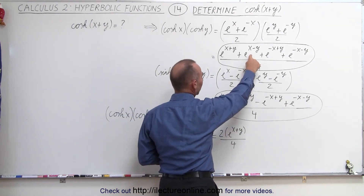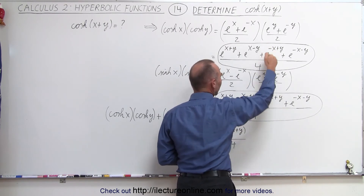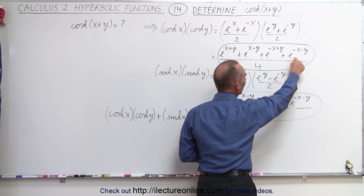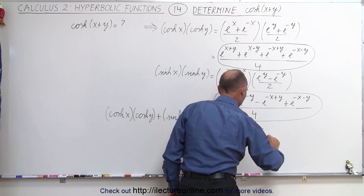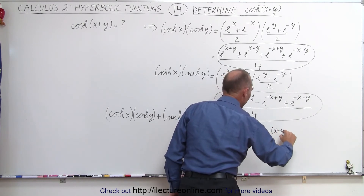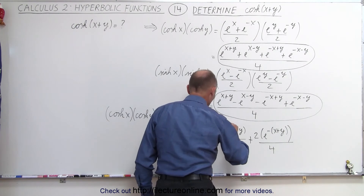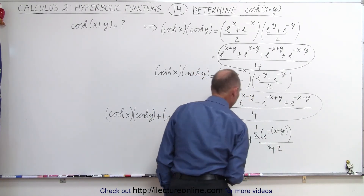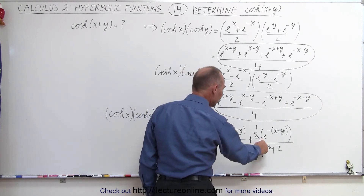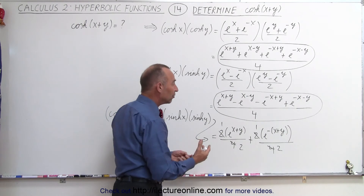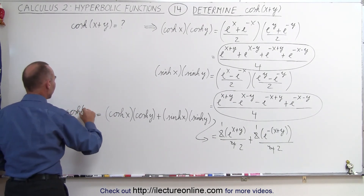Notice we have e to the x minus y and minus e to the x minus y — those two cancel out. Then we have e to the minus x plus y and minus e to the minus x plus y — those cancel out too. And finally, e to the minus x minus y and e to the minus x minus y add together to give plus 2 times e to the minus x minus y, divided by 4. Canceling the 2 and the 4, we get e to the x plus y plus e to the minus x plus y, both divided by 2, which is equal to the hyperbolic cosine of x plus y.